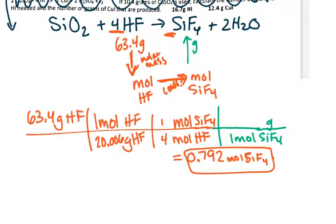And again, going from moles to grams, you use molar mass. So that's, again, from the periodic table. So I'm going to add up one silicon and four fluorine. And I get 104.078.